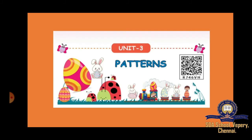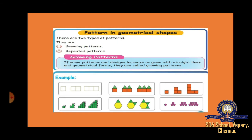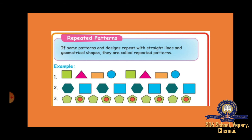Now, lesson number 3 — patterns. Very easy. Two types of patterns: growing patterns, where designs increase or grow with straight lines and geometrical forms; and repeated patterns, where the same design or pattern repeats. If some pattern repeats with straight lines and geometrical shapes, it is called a repeated pattern.